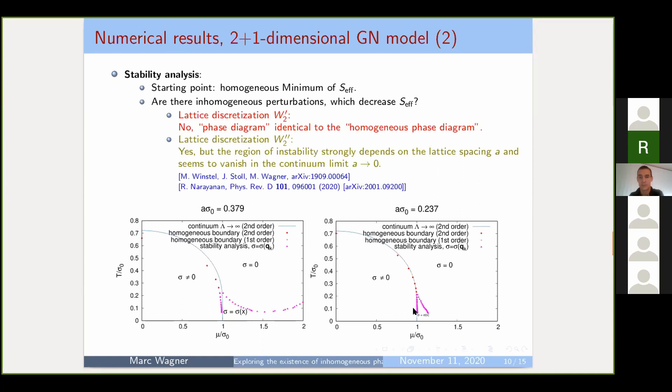In this context, I'd also like to mention this paper here. I think here it was first realized that for some discretization, it probably depends on the lattice spacing and goes away if the lattice spacing is sent to zero.